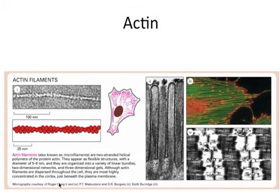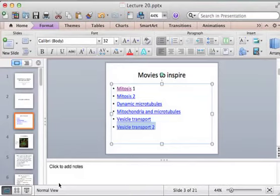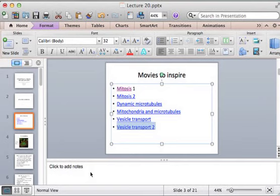Okay, actin, microtubules, and intermediate filaments. Do you guys have any questions about what we spoke about? It's really just an introduction to the cytoskeleton. Intermediate filaments are super important — we would be squashed just from touching something if we didn't have them — but just know what I told you. Don't read a whole chapter on intermediate filaments.